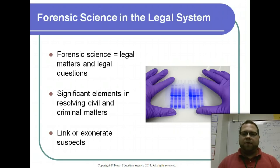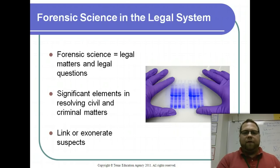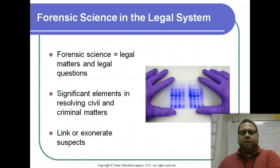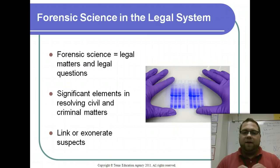As far as forensic science goes, there's no difference between a criminal case and a civil case when you are analyzing evidence — whether it's a murder investigation or working with an insurance company as a forensic scientist, there's really no difference in how you go about your job. When dealing especially with criminal cases, your main objective is to either link or exonerate suspects. The work you do could put somebody in jail, but it also could prove someone's innocence, so it carries a great deal of weight.